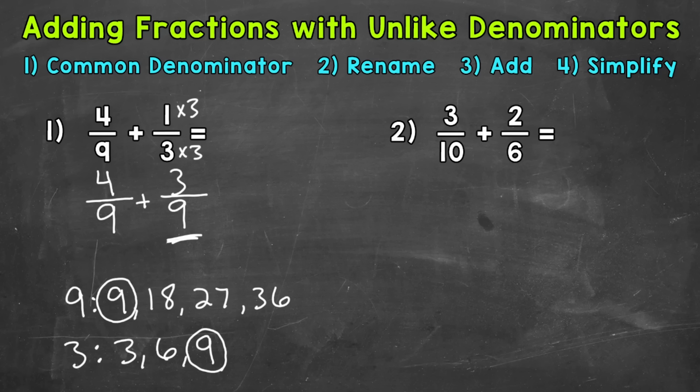Now that both fractions have a common denominator, we can add. So when we add fractions, we add the numerators, the top numbers. 4 plus 3 is 7. And then we keep the denominator the same. So 9. 7 ninths is our final answer.